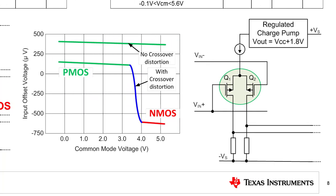Another approach to creating a rail-to-rail amplifier, shown on the right, is to use an internal charge pump to increase the positive supply. In this case, the PMOS input stage is used. The PMOS normally has good swing for common mode signals near the negative supply, but is limited as the common mode approaches the positive supply. This problem is eliminated by increasing the positive supply using an internal charge pump. In this example, the internal positive power supply rail is increased by 1.7 volts to avoid the common mode limitation.